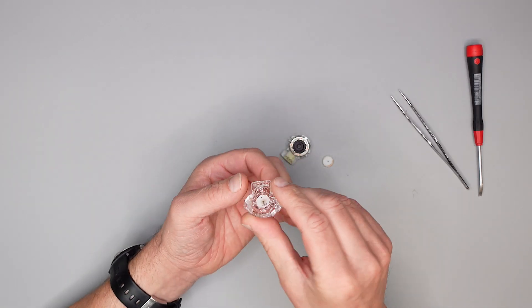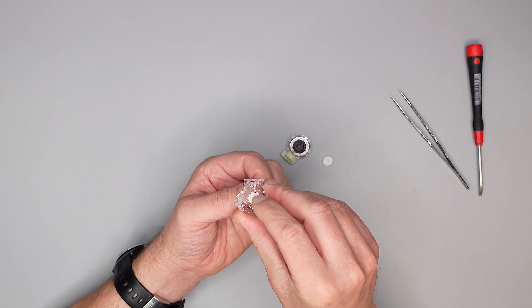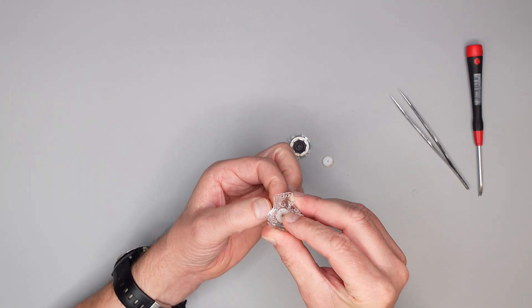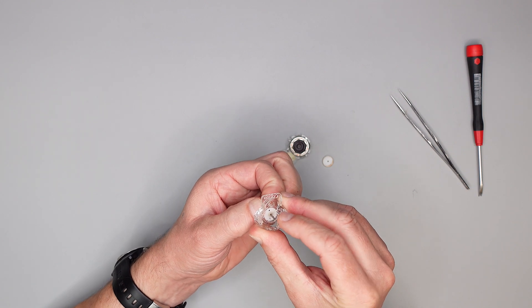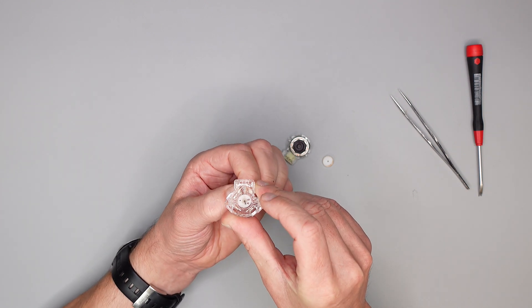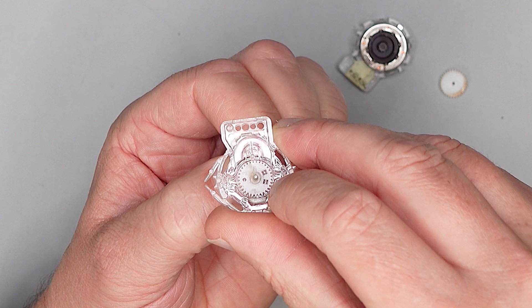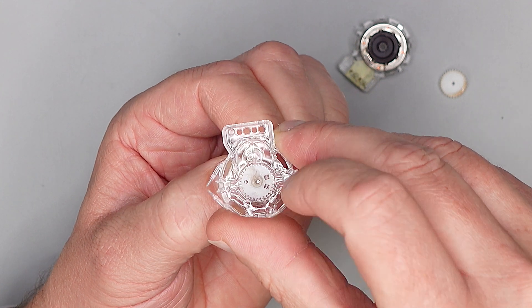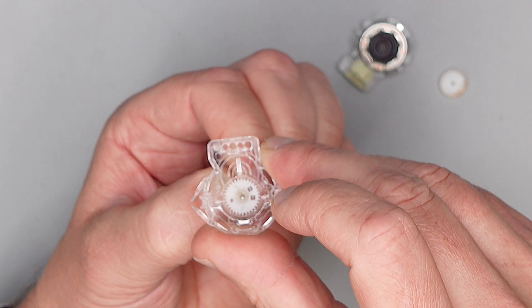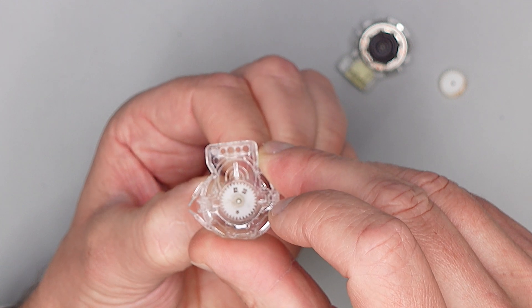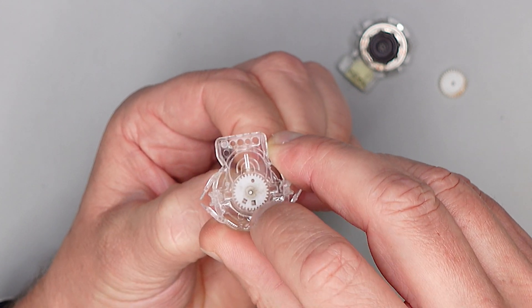Wichtig ist, dass man jetzt hier hinten mit dem Finger festhält und dabei immer nach unten zieht, dass man hier Spannung drauf hat. Jetzt drehen wir, und jetzt sieht man hier schon, wenn man genau guckt, wie dieser Mitnehmer von dem ersten Zahnrad jetzt die Feder mitnimmt.